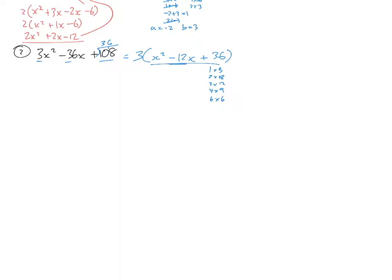And the number in front of x is negative 12. Is there any way I'm going to get negative 12 with 1 and 3? No. Is there any way I'm going to get negative 12 with 2 and 18? Well, I could get 16 or negative 16. No. Could I get it with 3 and 12? I could get 12, 13, 15 or 9. No. Is there any way I could get negative 12 with 4 and 9? 9, 10, 11, 12, 13. I could get 13 or 5.